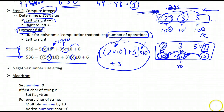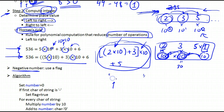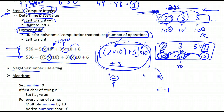One last step: what if it's a negative number? A negative number is indicated by the first character in the string. If that first character is a negative sign, we scan it at the beginning, set a flag, and at the end multiply our resulting integer by minus 1.